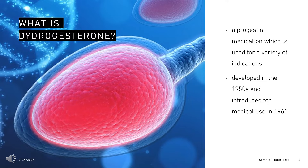Dydrogesterone was developed in the 1950s and introduced for medical use in 1961. It is available widely throughout Europe, including in the United Kingdom, and is also marketed in Australia and elsewhere in the world.